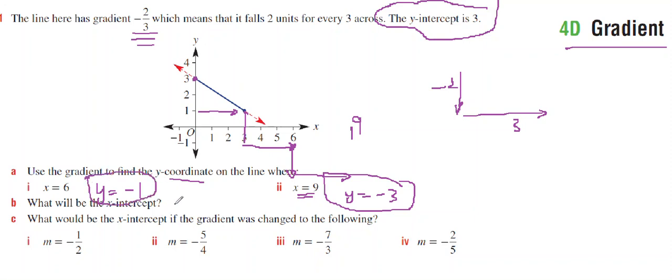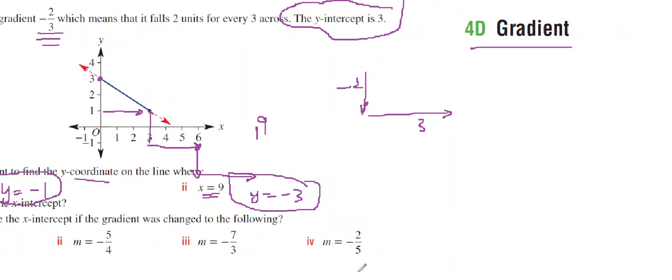And what would be the x-intercept? If I've got to use the gradient to do this, then I'm thinking I'm at the point here, which is (3, 1). And my gradient is negative 2 on 3.